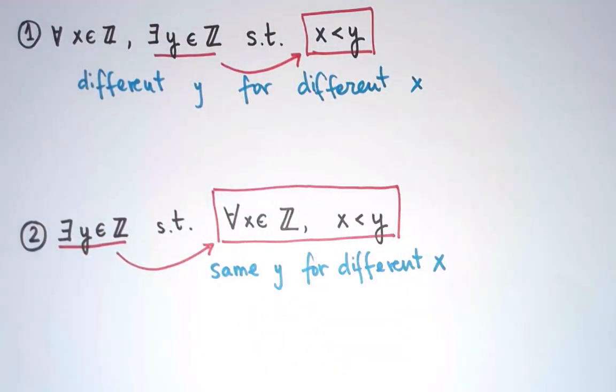We don't have to. Perhaps we are able to find the same y working for all x, but we are allowed to use different y, whereas in the second statement, it should be the same y for all x. And that's the difference between the two.